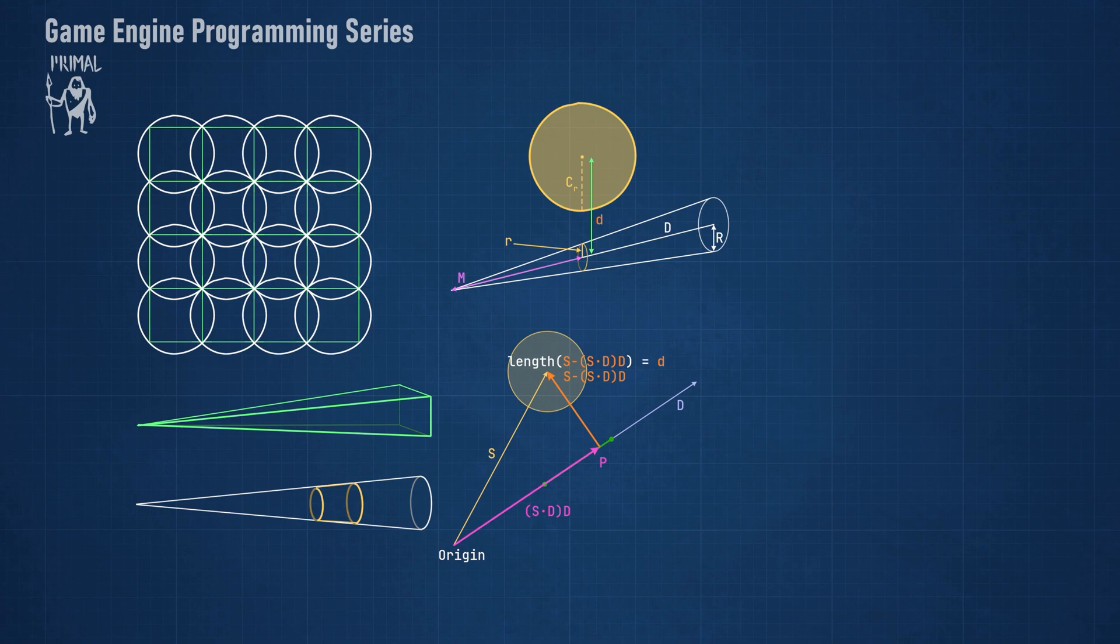Next we need to calculate the cone radius at point p. We can use similar triangles for this which states that the ratio of r and distance p is the same as the ratio of cone base radius and the far plane. We can use this to calculate r. Now we have everything we need to determine if the sphere and the cone intersect.